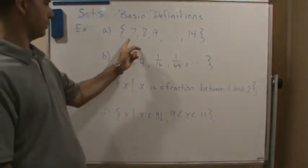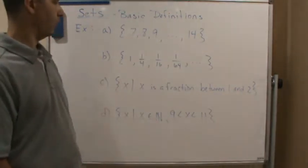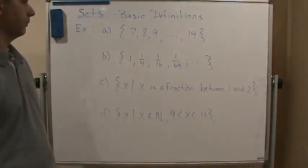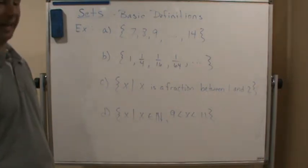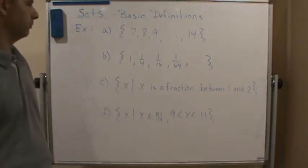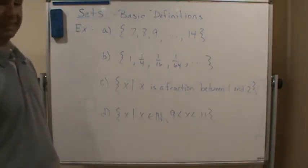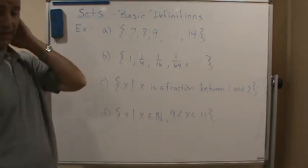How many elements are in this set? We would count seven to 14. So in this case, there are eight. That means the size of that set is eight. There's only eight elements in the set.